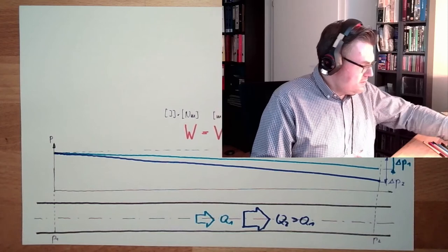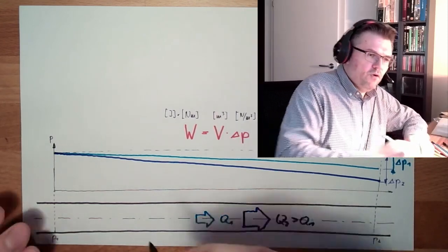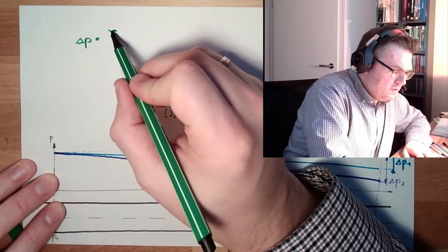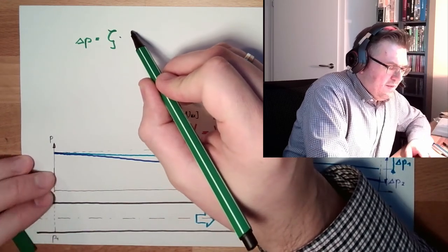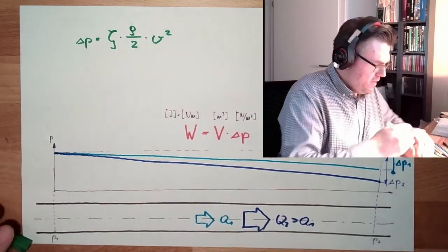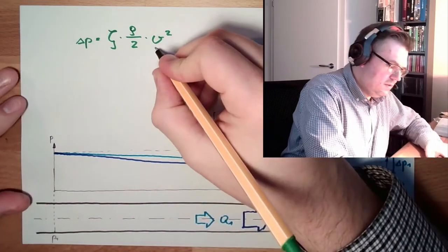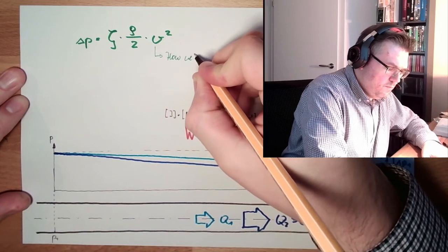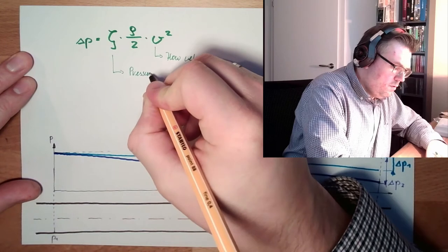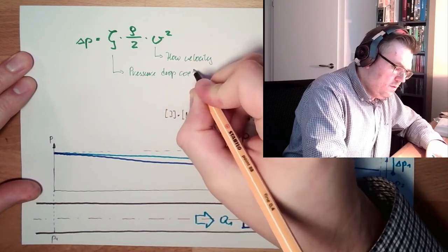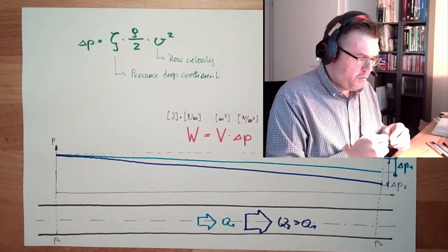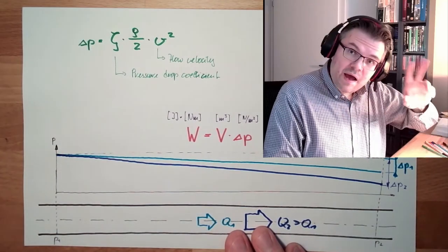Well, you can calculate this. You can say the pressure drop, delta p, equals, and then there is a coefficient, pressure drop coefficient, it's called zeta, multiplied by, there's the density inside, rho, half, multiplied by v squared. This v here is the flow velocity. The middle flow velocity. This here is the pressure drop coefficient. And this is the resulting pressure drop. And we see, if we have double the speed, we have four times the pressure drop.